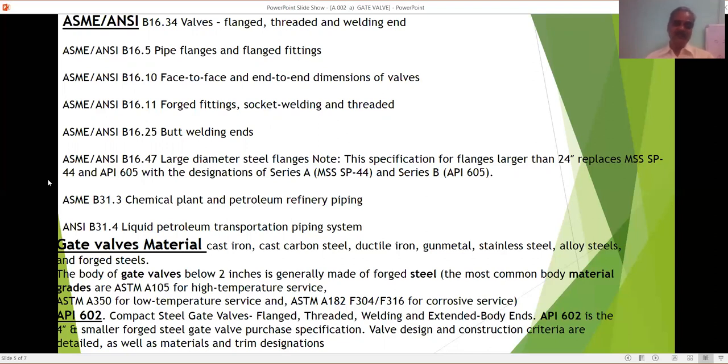ASME B16.47 large diameter steel flanges. This specification for flanges larger than 24 inches, replaces MSS SP 44 and API 605, with the designations of series A, MSS SP 44 and series B, API 605. This is replacing.